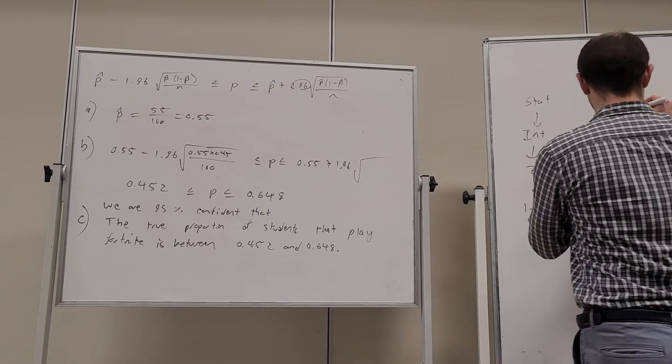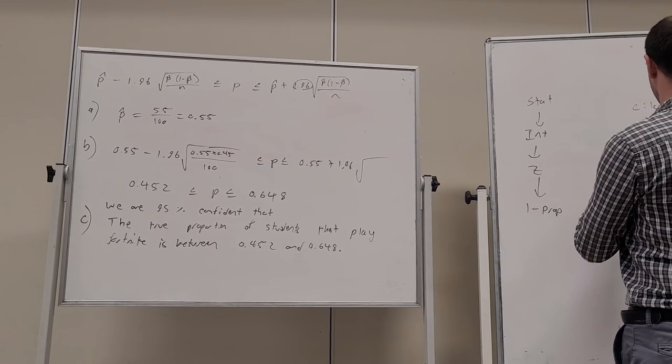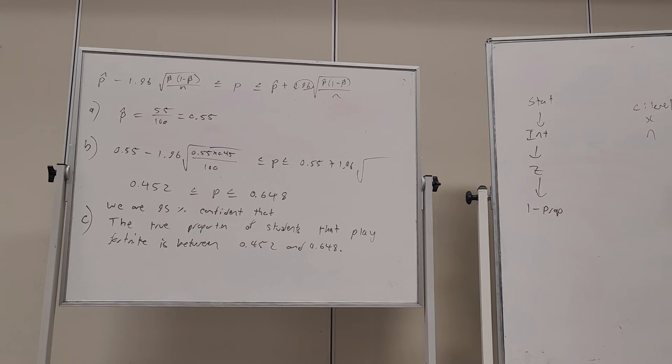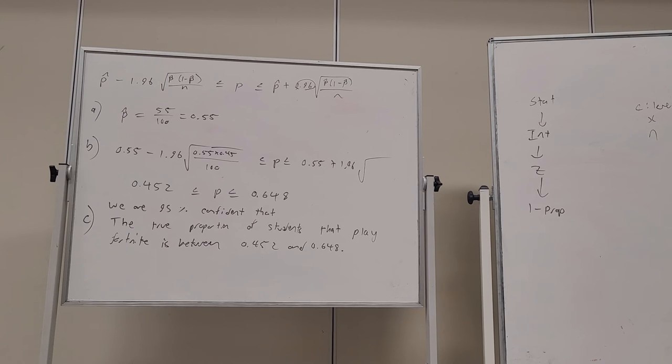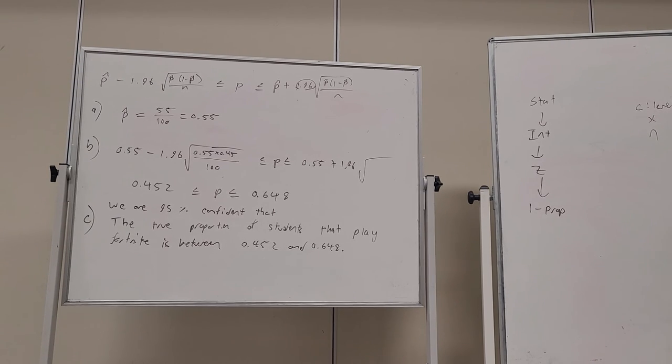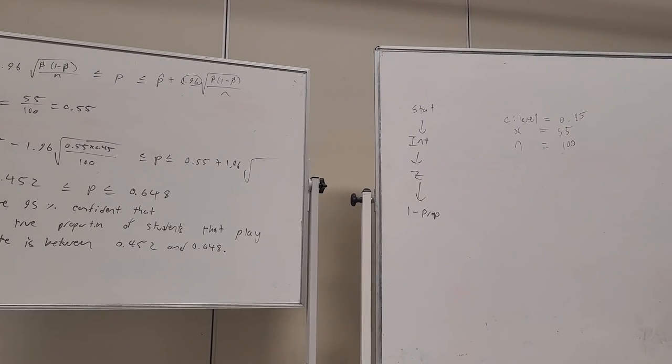And then it's going to pop up with confidence level, X and N. So I put in, we want 95% confidence. You can have different levels of confidence. We sampled 55 out of 100, 55 successes out of 100 trials. So that's how we can use our calculator to generate these confidence intervals.